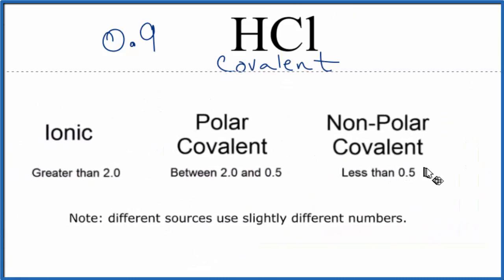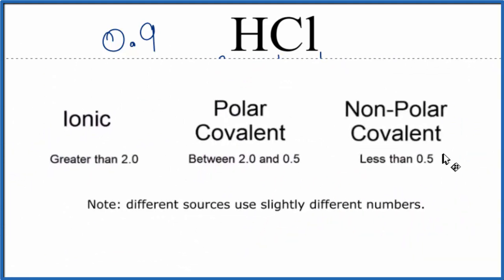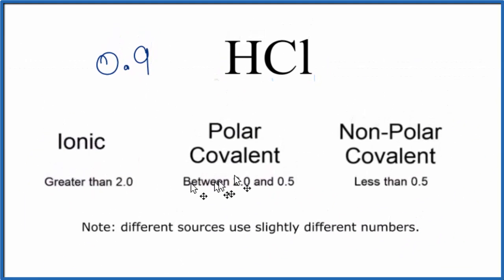When we think about bonding, we think of it as a continuum. So here we're looking at ionic, and then we have polar covalent, that's kind of in between, and then we have non-polar covalent. HCl, we said the difference is 0.9. So that's going to make it a polar covalent compound.